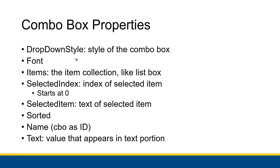The important properties: drop-down style, which I already showed; font; items, which is the item collection and works exactly like list box; selected index, which is the index of the selected item; sorted, same as list box — set to true it sorts everything in the list, set to false it puts items in the same order you entered them into the collection. The naming convention uses CBO as the prefix, so for example CBO rate would be the name for the combo box we were looking at.